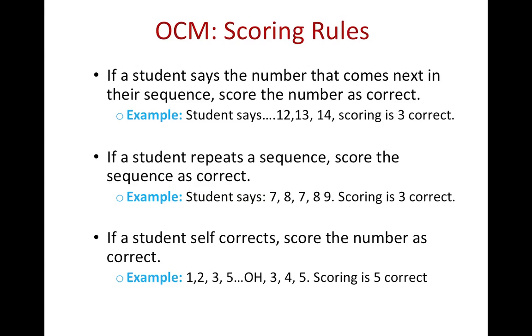If a student self-corrects, score the number as correct. For example: 1, 2, 3, 5 — oh, 3, 4, 5; scoring is five correct.